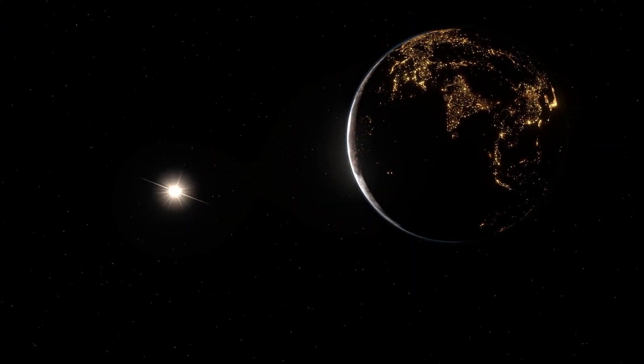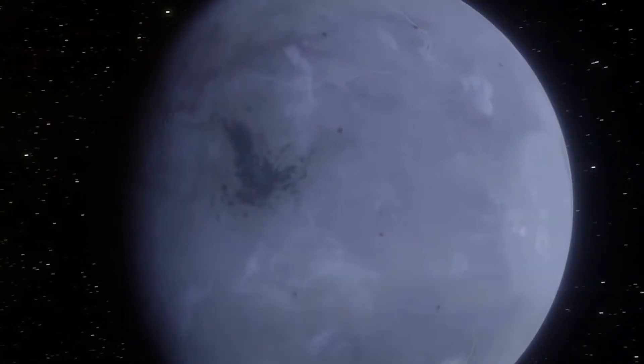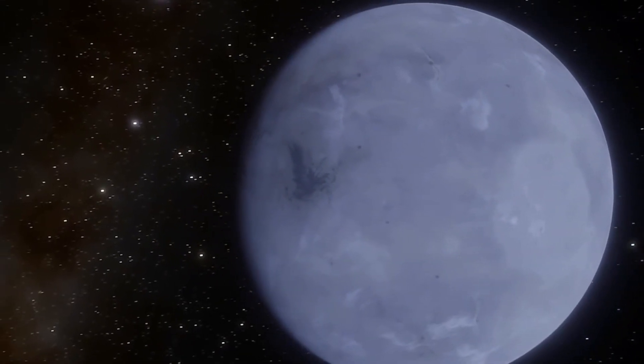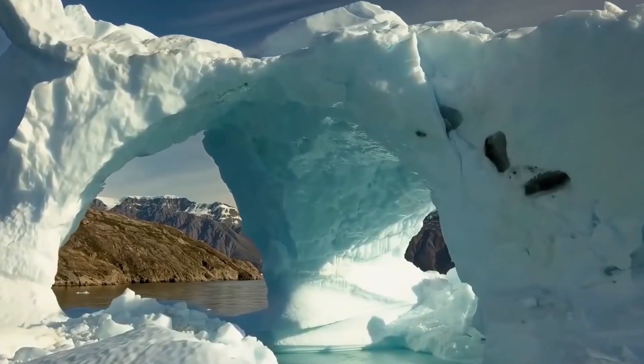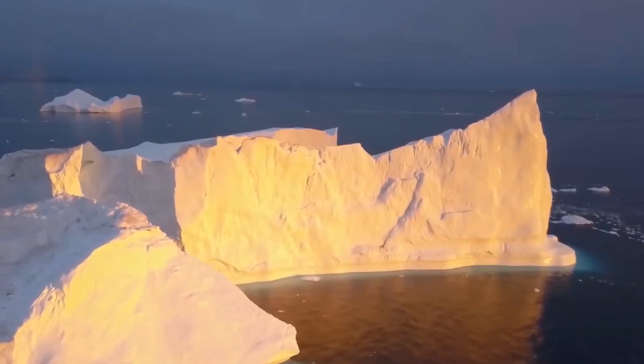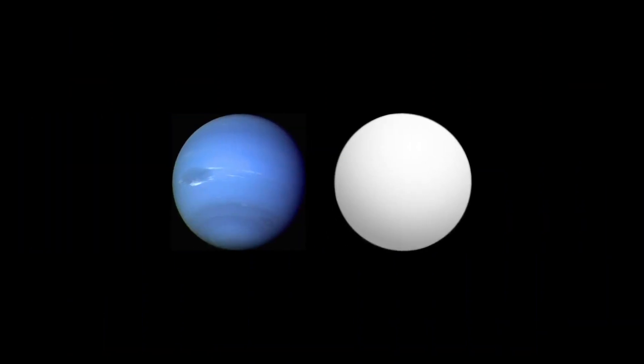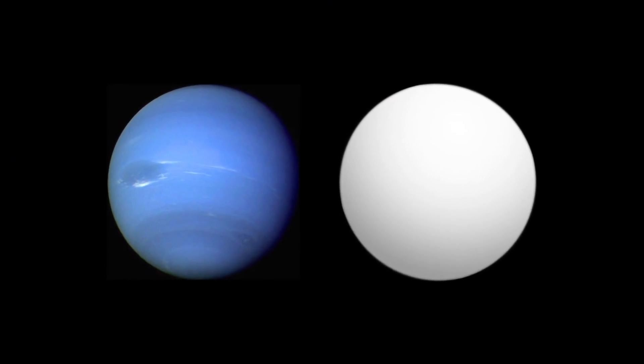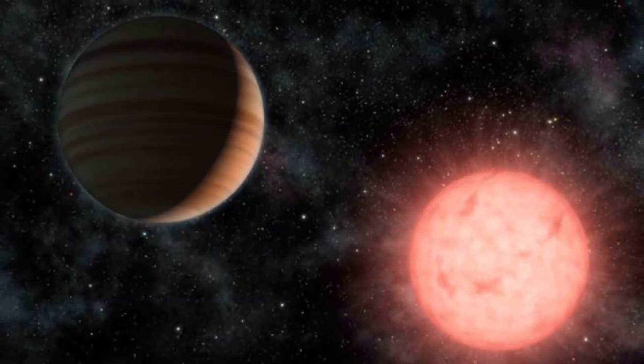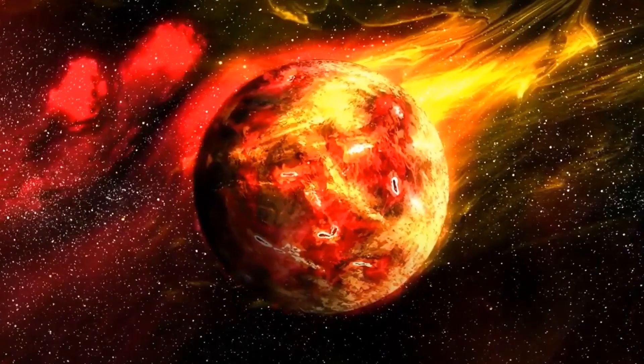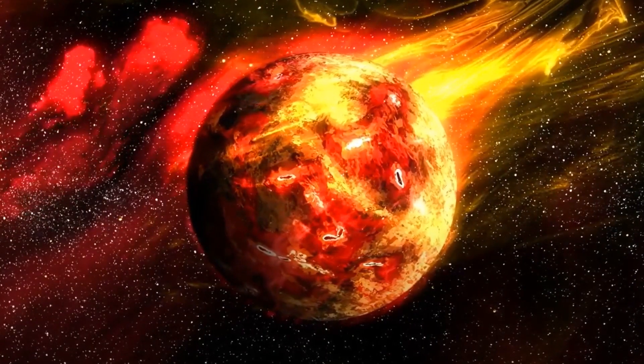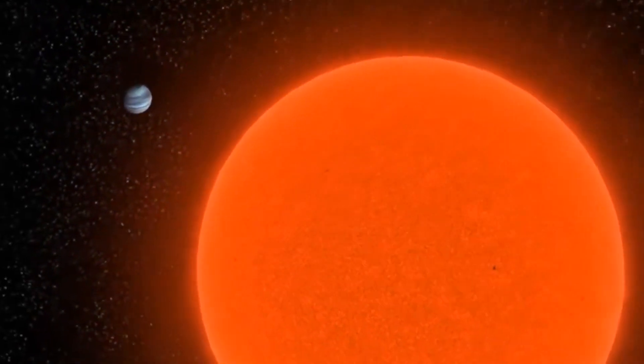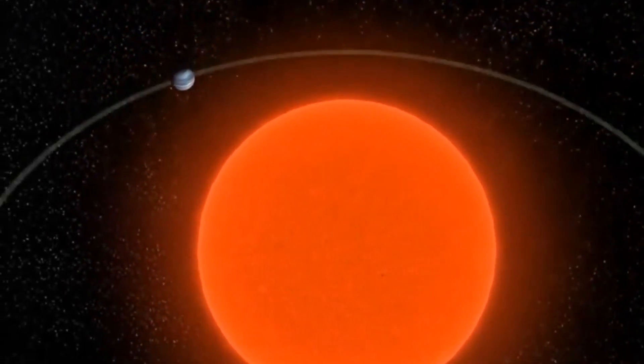Ironically, Pont also claims that Gliese 436b most likely has a similar composition to Neptune, which is also made up of ice. Planets with such characteristics are often described as ocean worlds. However, we cannot outrightly consider Neptune an ocean world because of the distance between the gas giant and the Sun. As for Gliese 436b, Pont believes it would have been impossible for water to condense to form the exoplanet close to its parent star in the way that it did. So he postulates that the planet would have initially been formed farther out before migrating inwards.